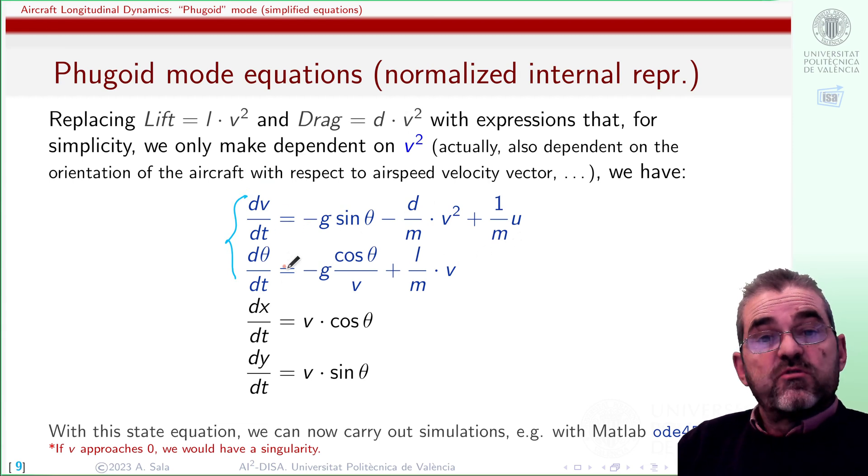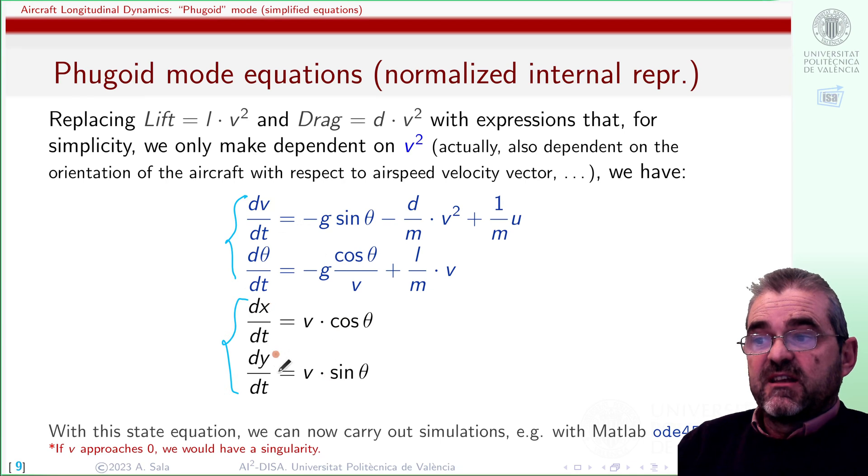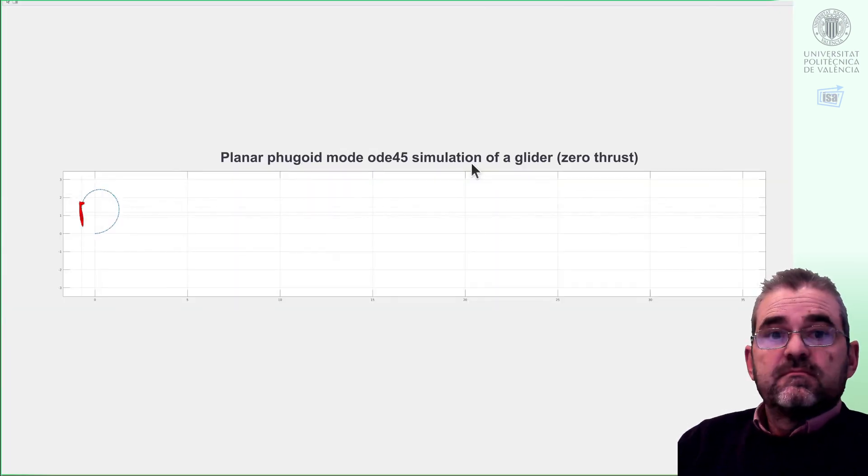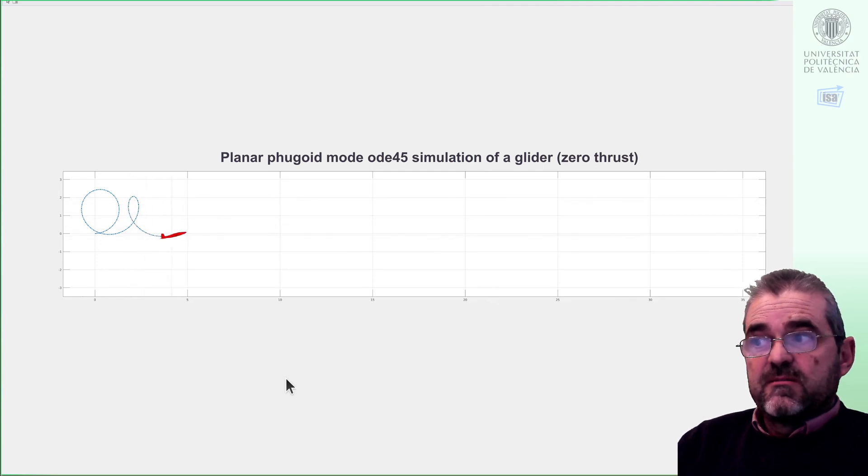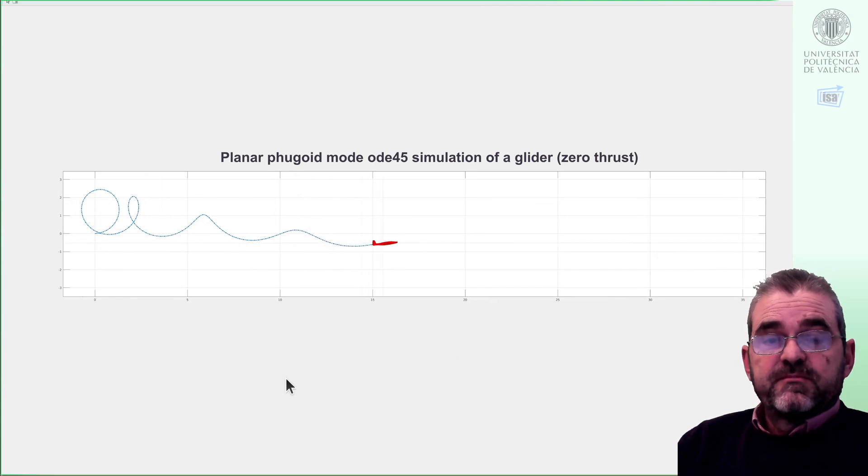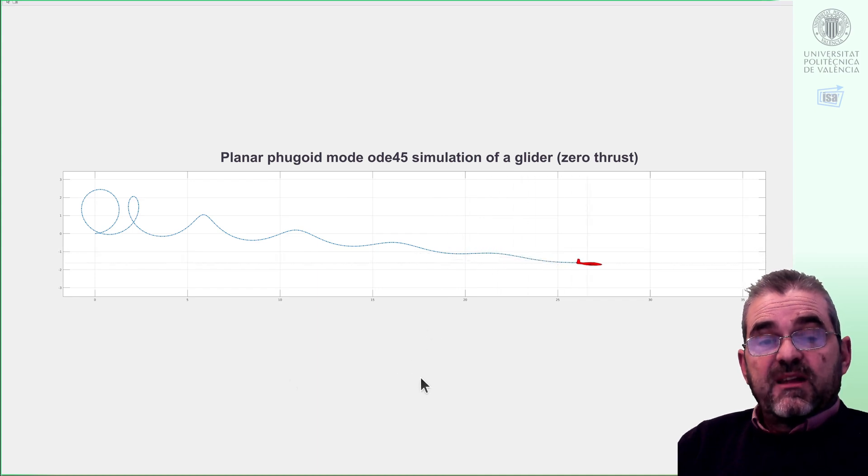With this manipulation the two equations in the previous slide can be written like this, and once we have a solution of v and θ then we can integrate them to obtain a simulation of the trajectory x and y. And this is exactly what we have done here in this MATLAB simulation with a numerical integrator such as ODE45.